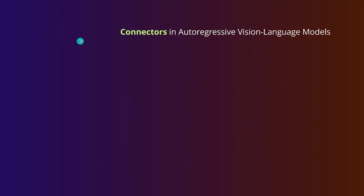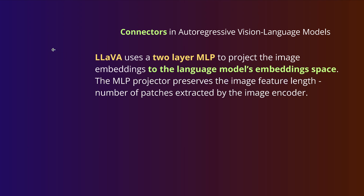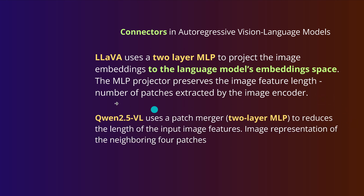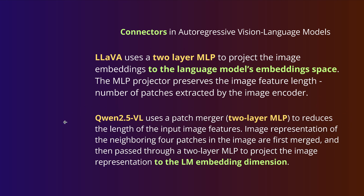How do we build those connectors? In autoregressive vision language models, LLaVA uses a two-layer MLP to project image embeddings to the language model embedding space, preserving the image feature length — the number of patches extracted by the image encoder. Qwen2-VL uses a patch merger, also a two-layer MLP, to reduce the length of input image features: neighboring four patches are first merged and then passed through a two-layer MLP to project the image representation to the language model embedding dimension.